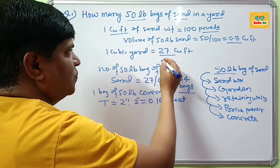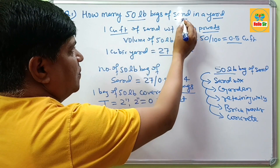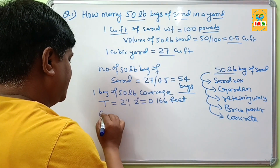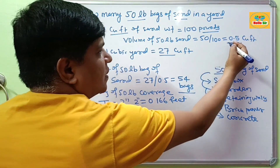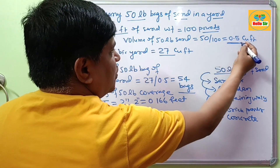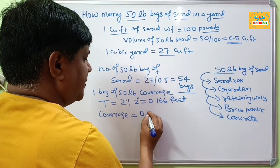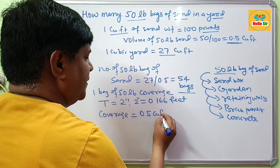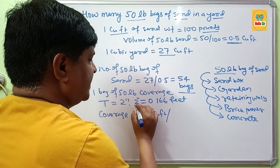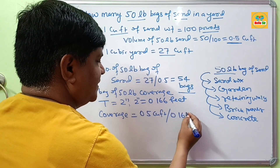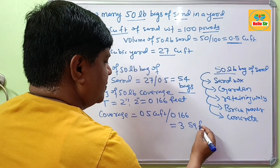To find out how many square feet one 50 lb bag of sand covers: coverage equals total cubic feet divided by thickness. One bag of 50 lb sand is 0.5 cubic feet, divided by 0.166 feet thickness, which gives about 3 square feet.